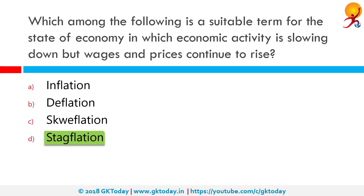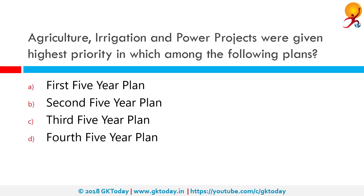Agriculture, irrigation, and power projects were given the highest priority in which among the following plans? The correct answer is the First Five-Year Plan. The First Five-Year Plan covered the duration of 1951 to 1956 and was based on the Harrod-Domar model. Its main focus was on agricultural development, and it achieved a growth rate of 3.6 percent, which exceeded its target.